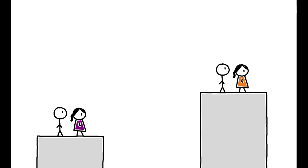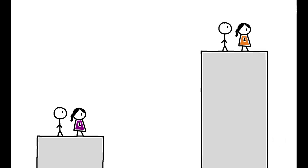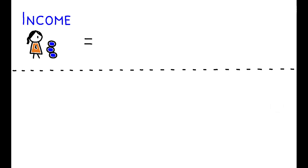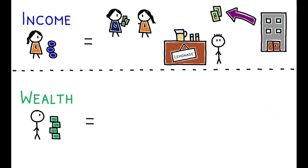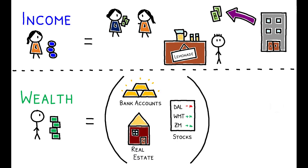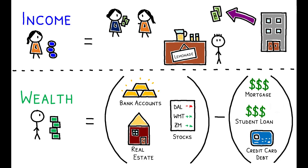Inequality is a defining issue of our time, and many papers have explored the causes and consequences of the widening gap between rich and poor. This work generally distinguishes between income inequality and wealth inequality. Income measures a household's annual cash inflows — for example, wages and salaries, income from self-employment, and dividend payments. Wealth is calculated by summing the value of a household's assets, both financial and non-financial, and then subtracting its debt. While income inequality measures disparities in how much households make, wealth inequality measures disparities in their net worth.